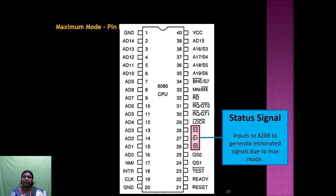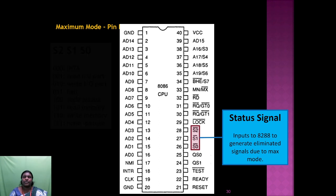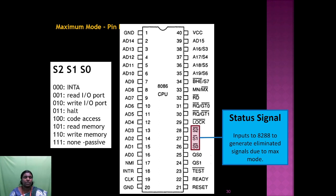When connecting a coprocessor to the 8086, the S2, S1, S0 status signals are decoded as follows: 000 = interrupt acknowledge; 001 = read IO port; 010 = write IO port; 011 = halt; 100 = code access (opcode fetch); 101 = read memory; 110 = write memory; 111 = passive (no operation).